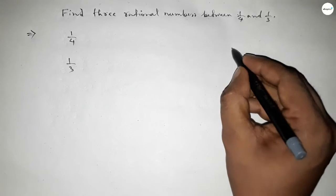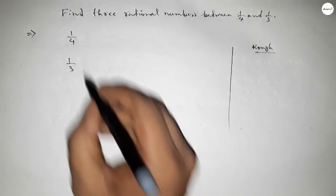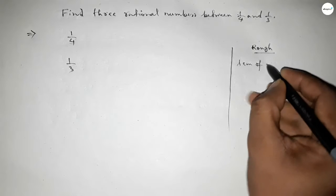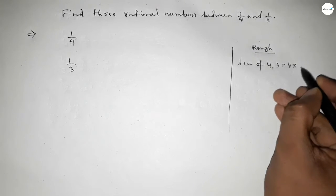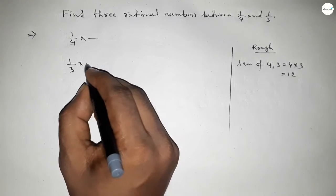Now the denominators of both are not equal, so first we have to find the LCM of 4 and 3. Their product is the LCM, which is 12.